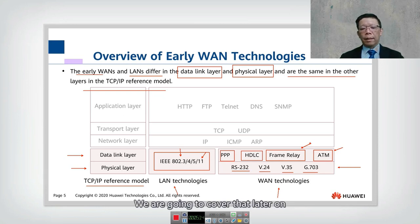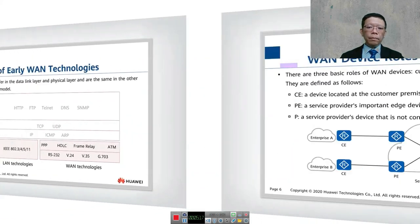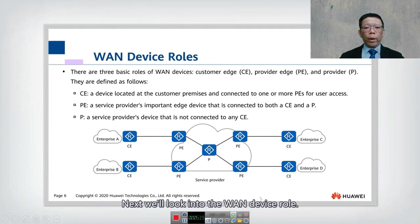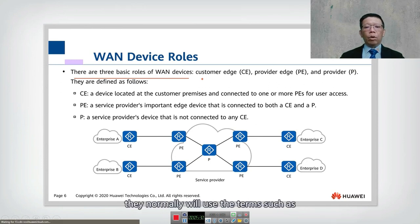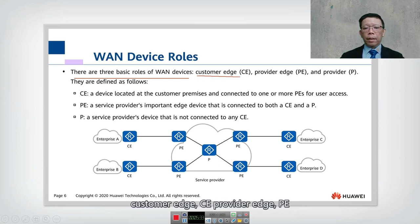We will cover newer technologies later on. Next, let's look into WAN device roles. There are three basic roles of WAN devices. When customers or providers talk about the WAN, they normally use the terms CE — customer edge — PE — provider edge — and P — provider.